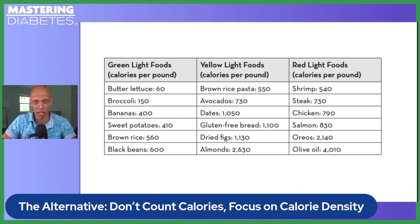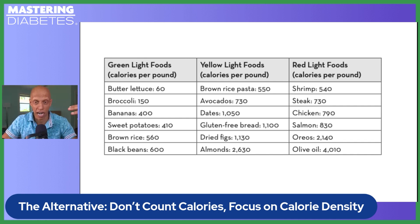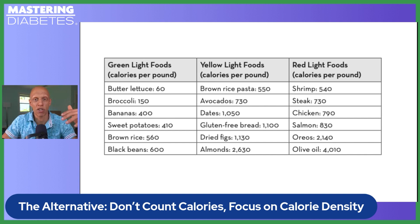In the green light category on the left-hand column, you see things like butter lettuce at 60 calories per pound, broccoli, bananas, sweet potatoes, brown rice, and black beans — spanning anywhere from 60 to north of 600 calories per pound. In the yellow light category, we have foods like brown rice pasta, avocados, dates, gluten-free bread, dried figs, and almonds, spanning from about 550 to north of 2,600 calories per pound.